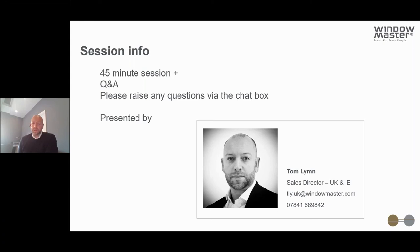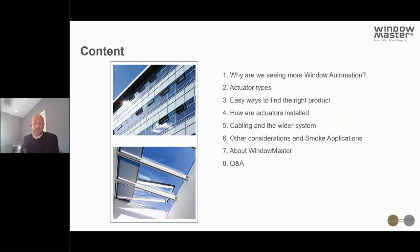We work closely with the team here looking after customers in the UK and Ireland. We've got a great team with some really good experience within the industry. The agenda for this webinar: we're going to take a quick look at why we're seeing more window automation in the industry, the different actuator types available, easy ways of finding the right products for your applications, how actuators are installed, cabling and the wider system, technical considerations, and we'll finish with a look at WindowMaster and the Q&A session.